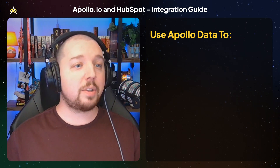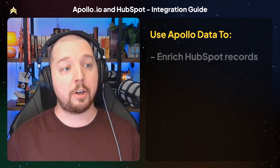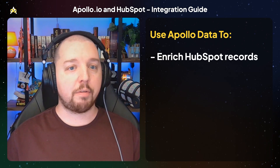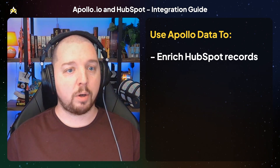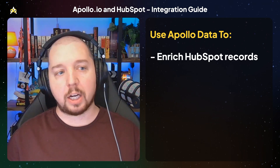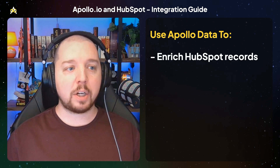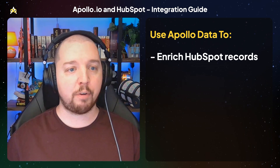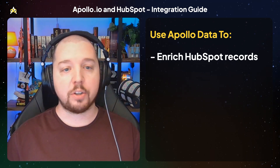The most obvious use case for Apollo and HubSpot together is to enrich your HubSpot records with better data. One benefit of this is that you can reduce the number of fields on your forms on your website. Buyers are more reluctant than ever to give their information, so making it as quick and frictionless as possible can significantly increase conversion rates. By asking fewer questions and enriching unknown information using Apollo, you can streamline your forms and boost those conversion rates.